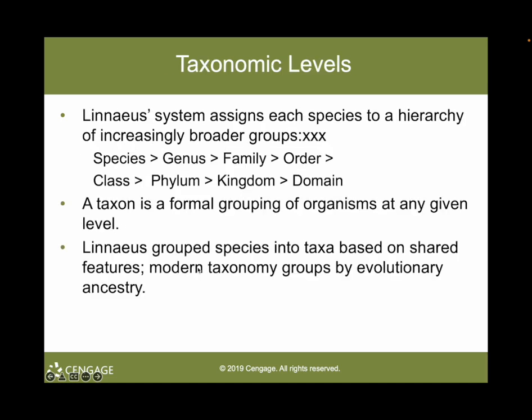Each taxonomic level is more general than the one below it. Linnaeus devised a system for assigning species to a hierarchy of increasingly broader groups; as you move up the hierarchy, each group is more inclusive. When he set the system up, Linnaeus did not have a theory of evolution in mind, nor did he have an idea of the vast number of extant species and extinct organisms that would be later discovered. His system nonetheless ended up providing important evidence for evolution, and Linnaeus's basic system still forms the framework for much of our modern classification.